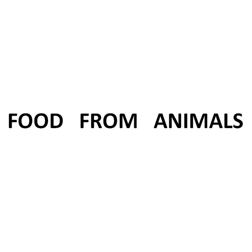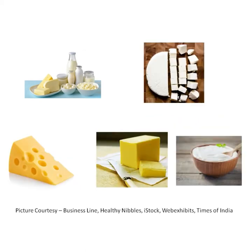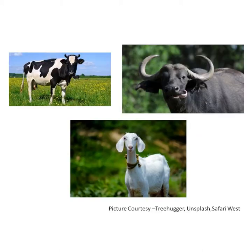Food from animals. We get dairy products, meat, eggs and seafood from animals. The dairy products like paneer, cheese, butter and curd are made from the milk of cows, buffaloes and goats.